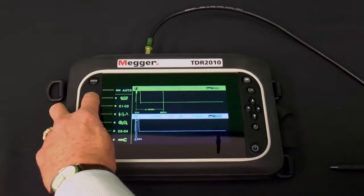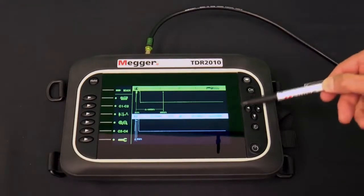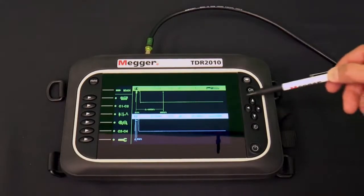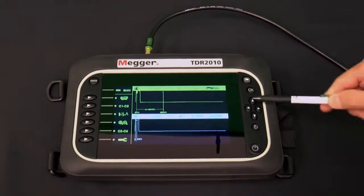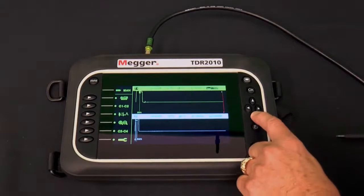Notice that in these operating modes, the left and right arrows of the navigation group move the cursors. We'll talk more about that in a minute. And the up and down arrows change the amount of the cable under test that is displayed on the screen.